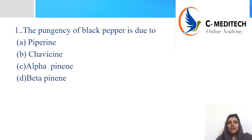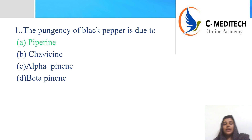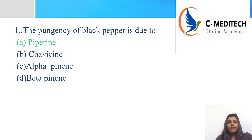The pungency of black pepper is due to Piperin. Black pepper is obtained from the undried fruits of Piper nigrum, belonging to the family Piperaceae. The main constituent responsible for pungency is Piperin.